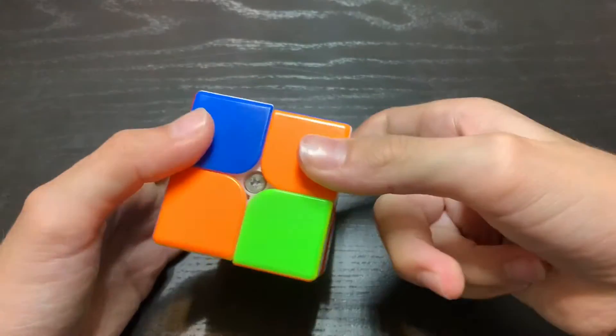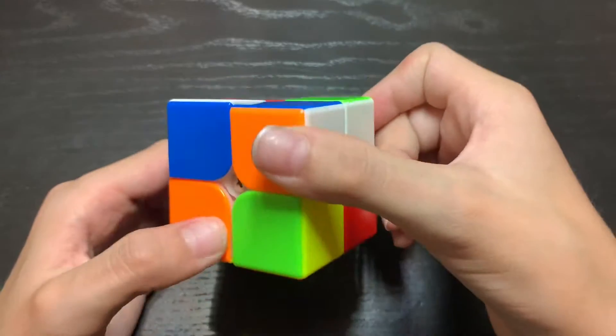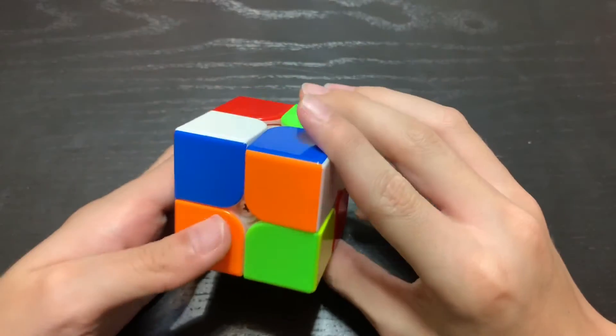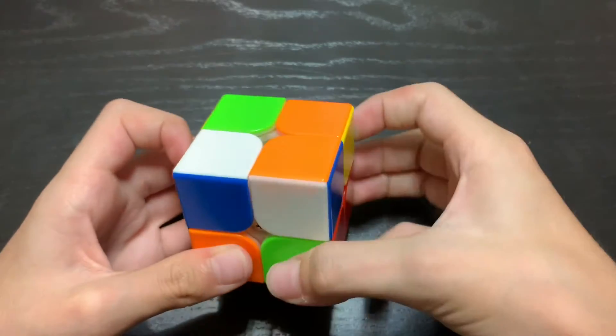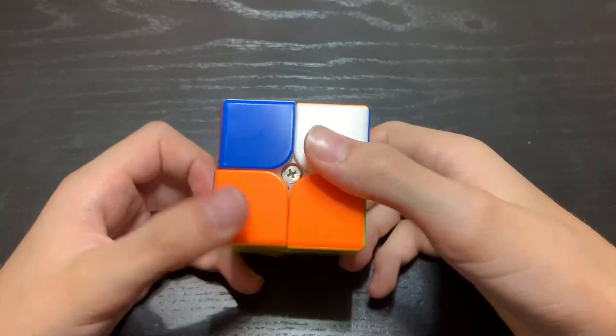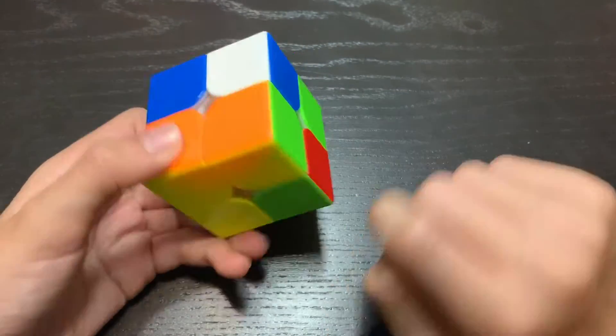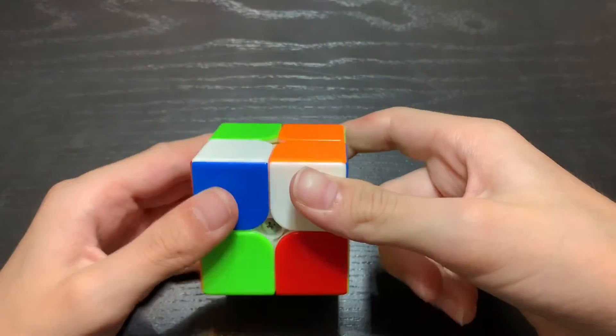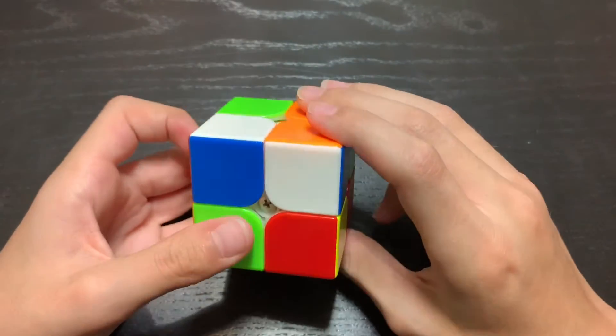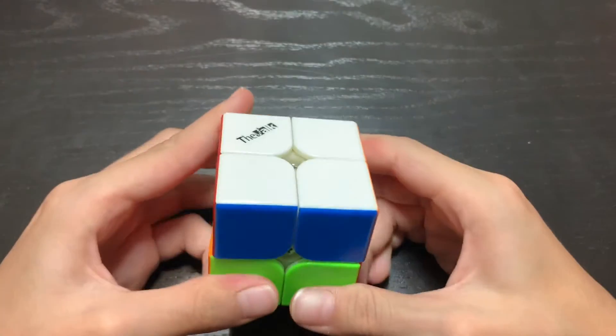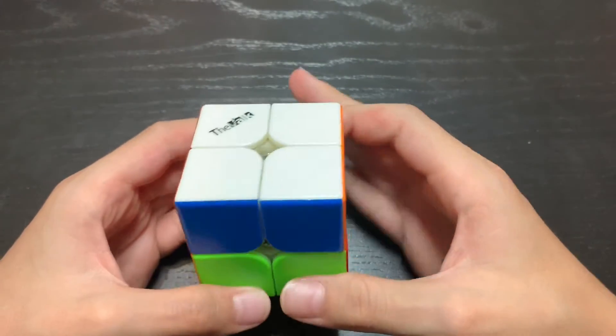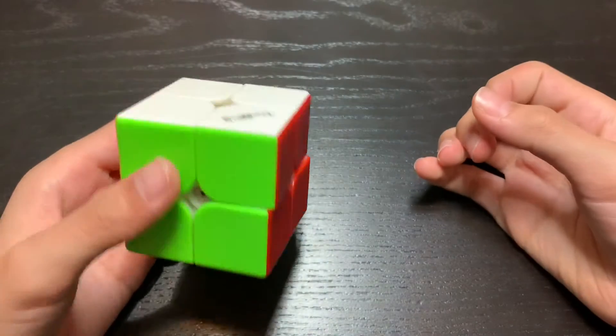Now I just turn the bottom. Remember, only turn the bottom, not the whole cube. Then do this algorithm again, R, U, R prime, U prime, until the yellow is facing down. And now I turn the bottom only one more time, and do that again. And now I just have to turn the cube the rest of the way. And it's solved.